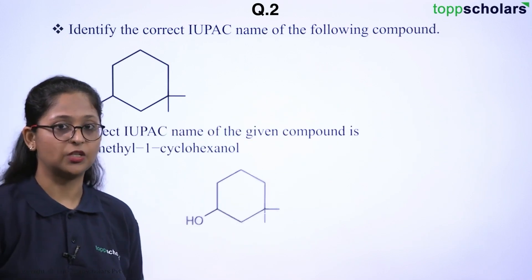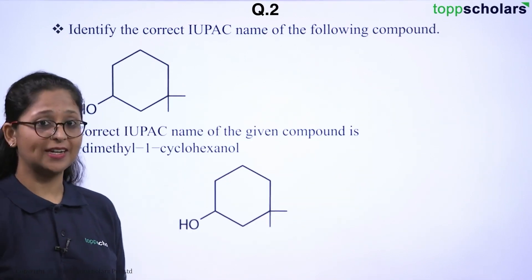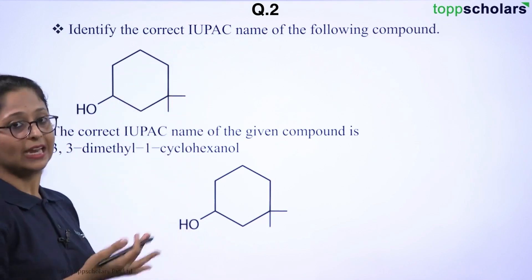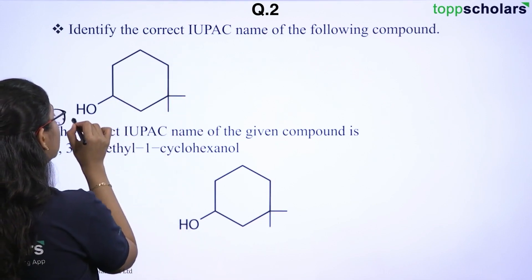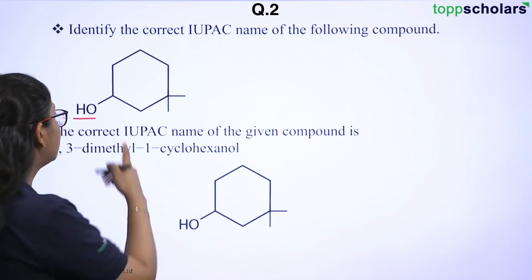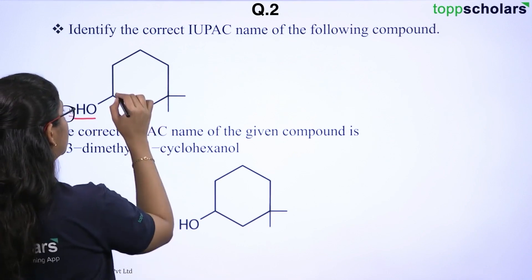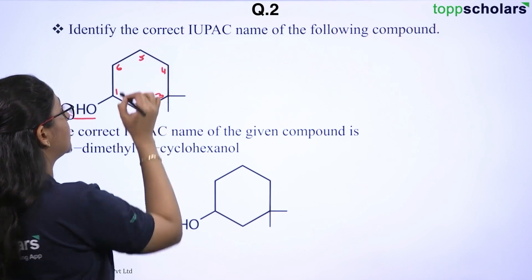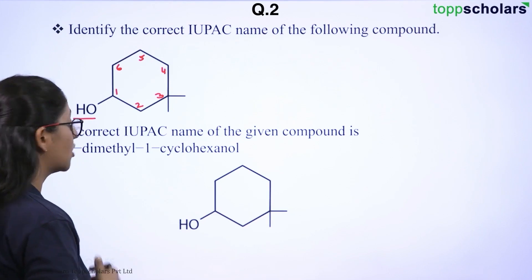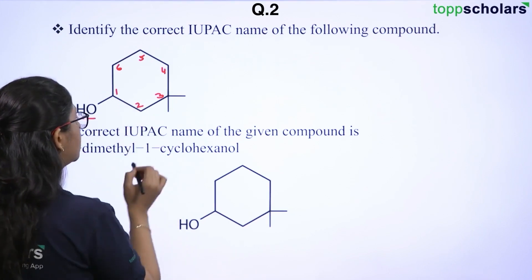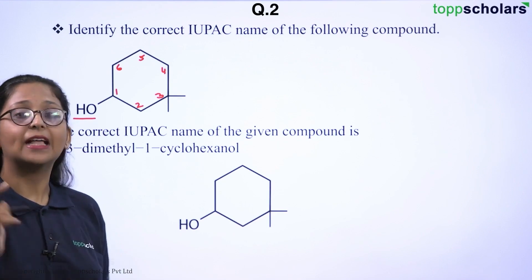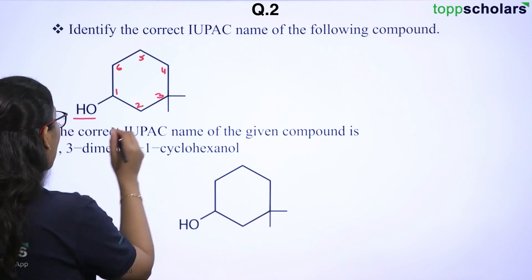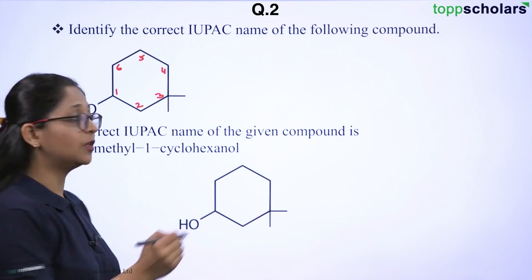Let us see how we are going to answer the question. As we can see, the structure is a cyclic structure, so we have to determine the IUPAC name accordingly. It's a cyclo ring and we can find that the OH group or the alcoholic group is present. So we will start numbering our cyclic structure from that position: 1, 2, 3, 4, 5, 6. We have 6 carbon atoms, so it's a cyclohexane ring structure. From this we can say that it's a cyclohexanol and the alcoholic group is present at the first carbon position. So it's 1-cyclohexanol, and on the third position we can see that methyl groups are added.